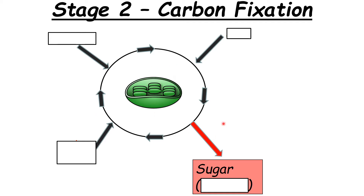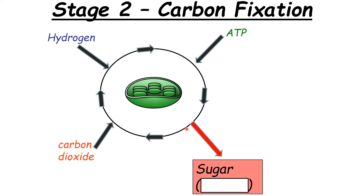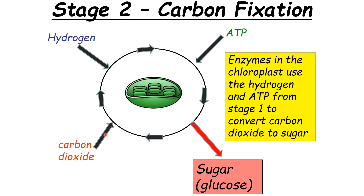In Stage 2, the two substances coming from Stage 1 are hydrogen and ATP. Sugar is a carbohydrate containing hydrogen, carbon, and oxygen — this is where carbon dioxide comes in, as in the original equation. Glucose is produced. Enzymes in the chloroplast use the hydrogen and ATP from Stage 1 to convert carbon dioxide into sugar.